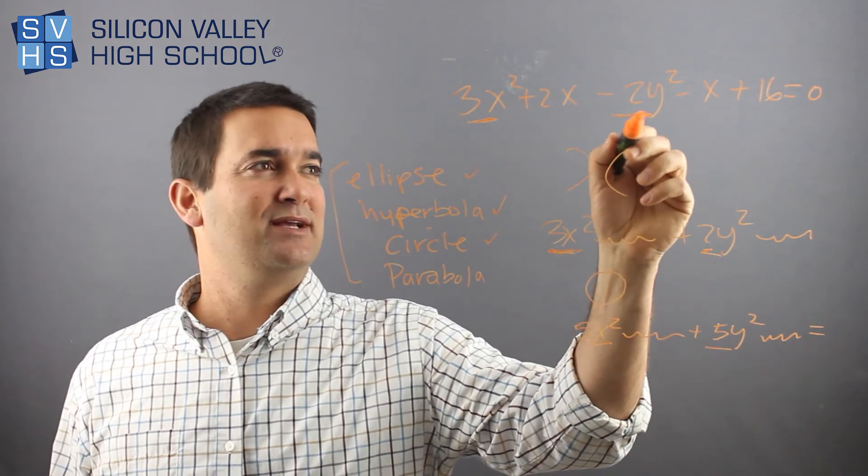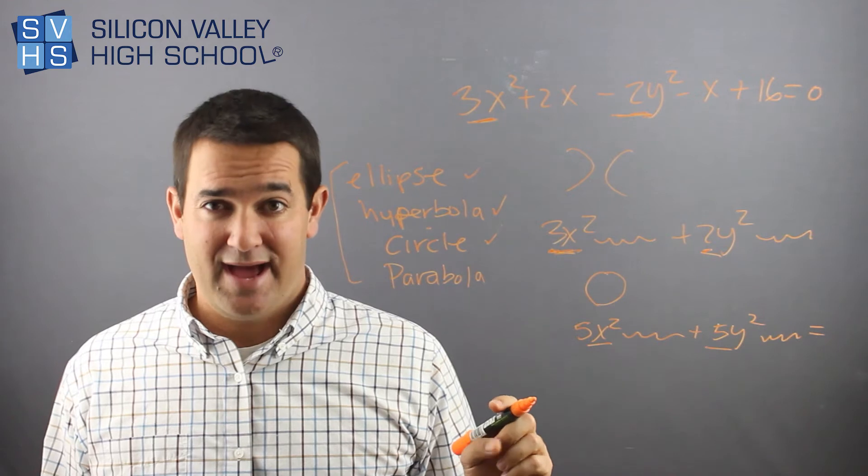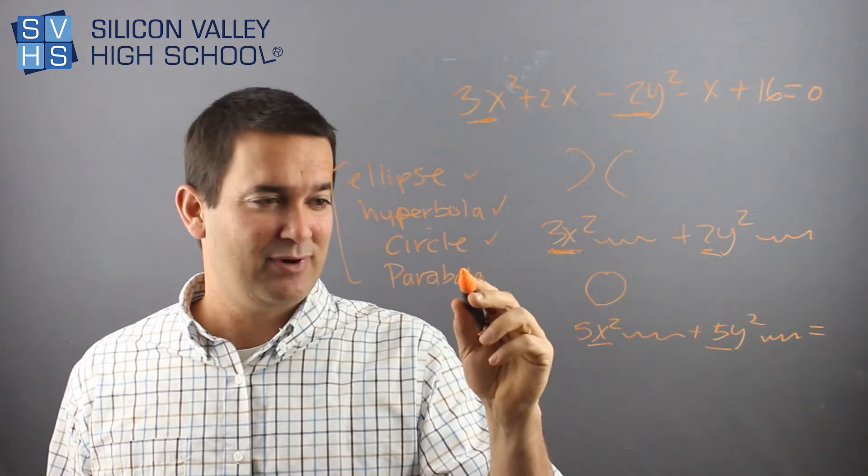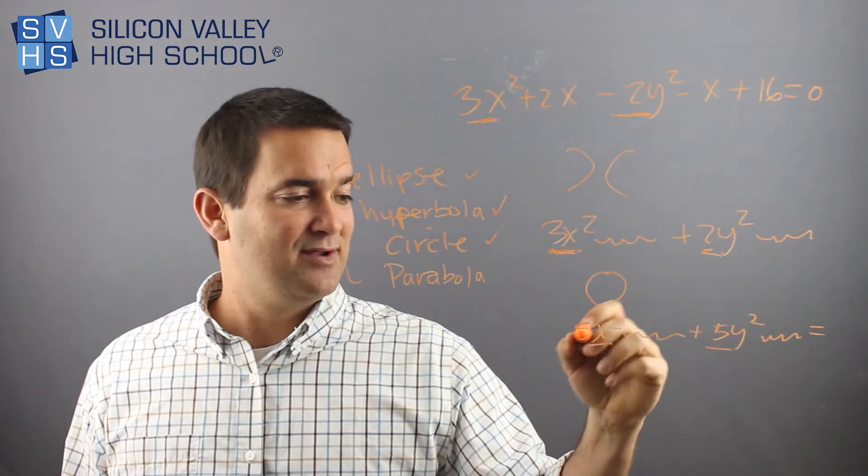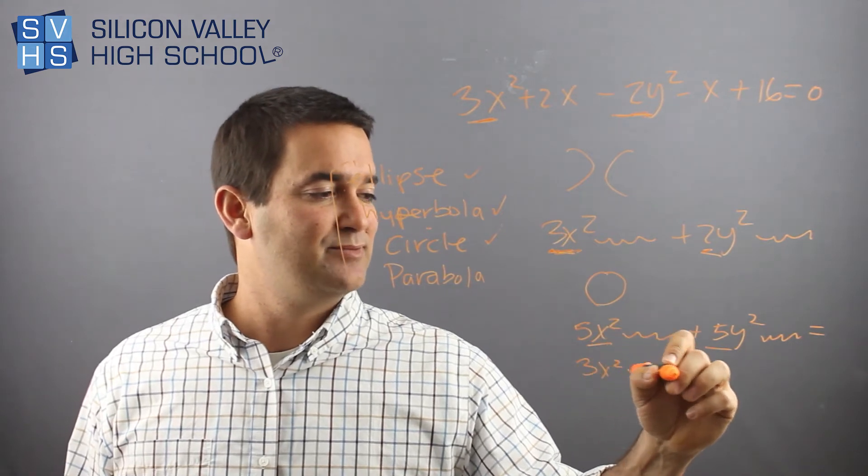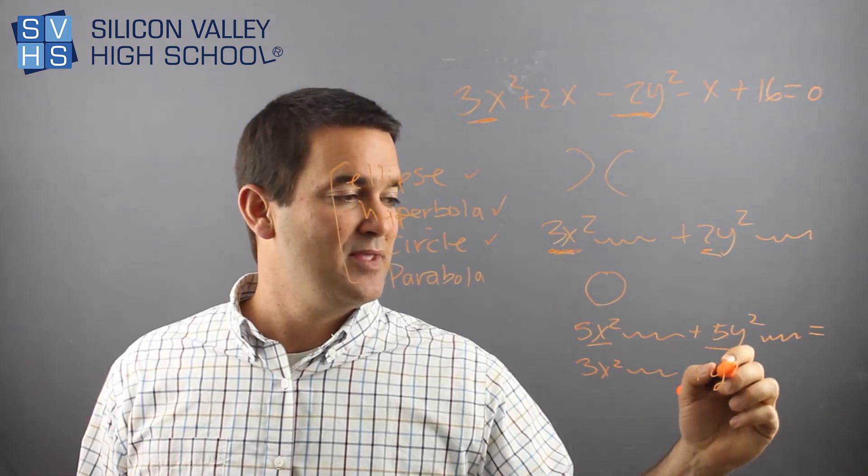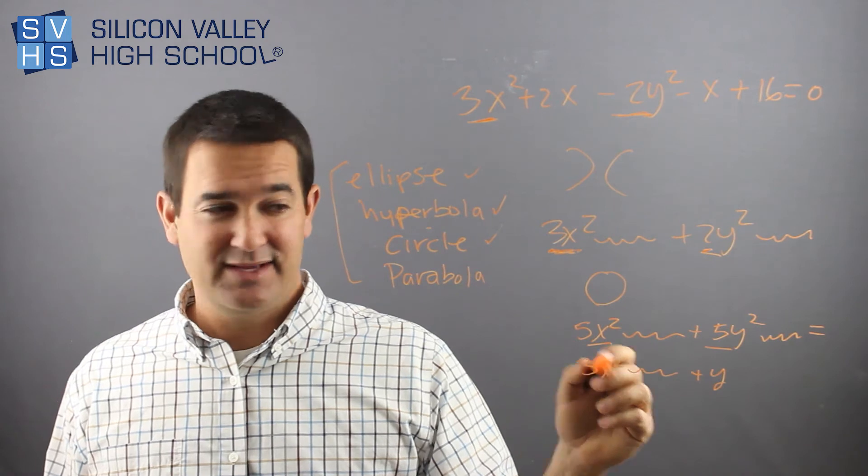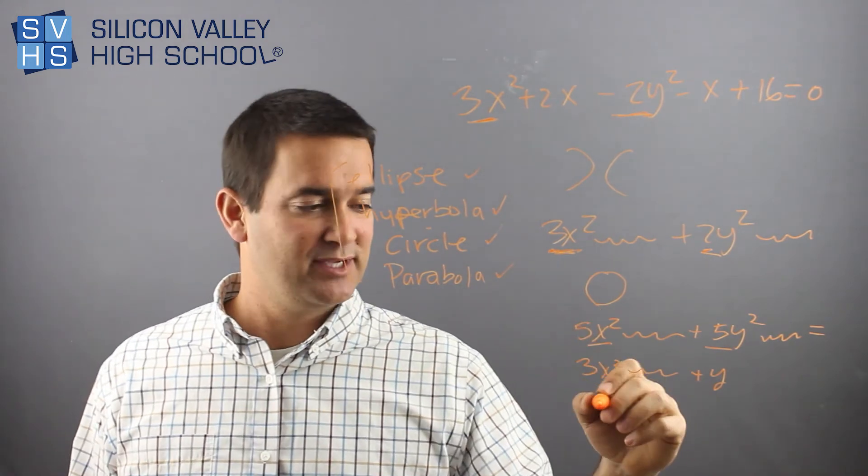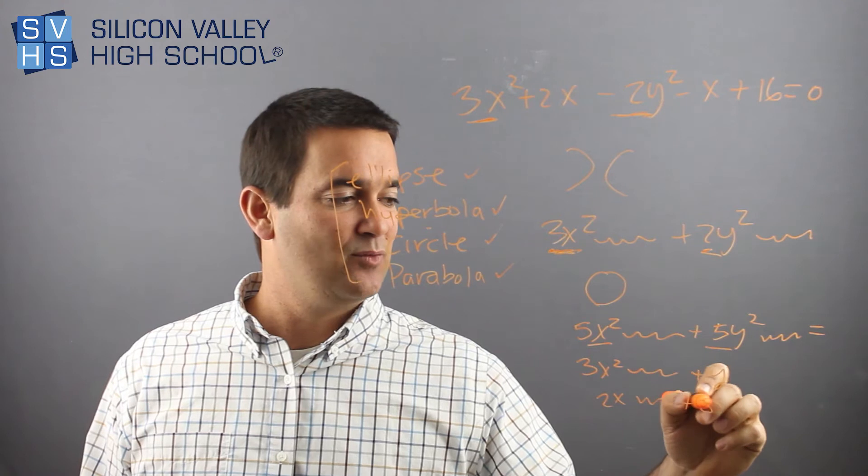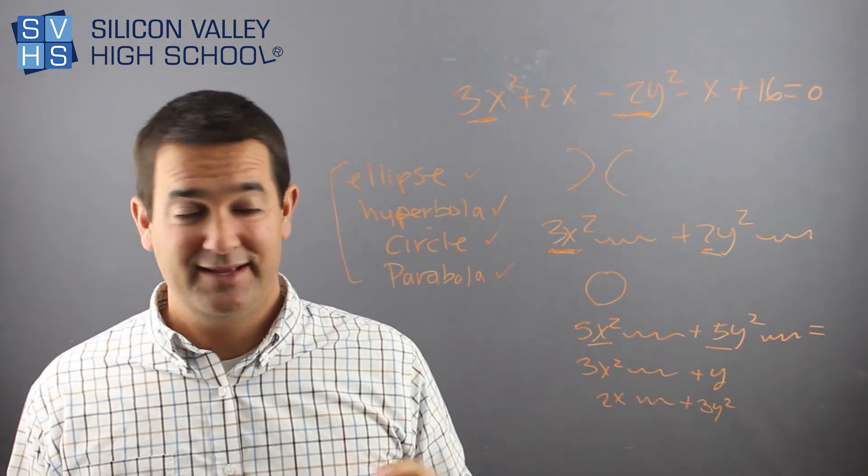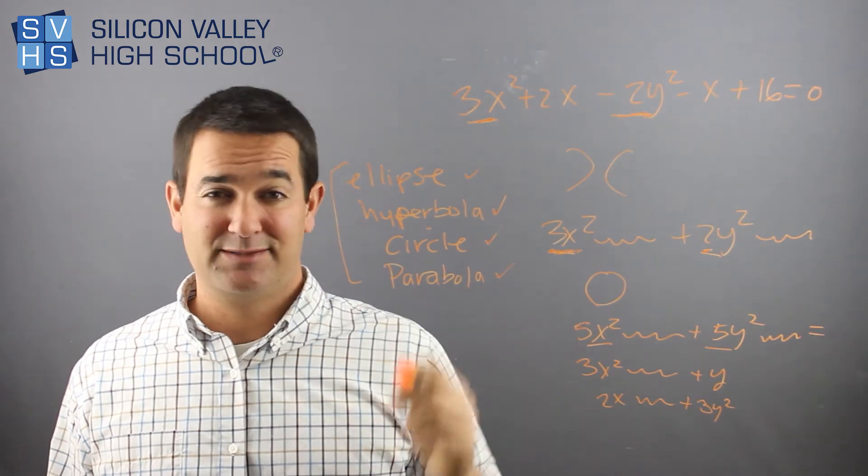So look for the x squared and the y squared and find out. Are they added or are they subtracted? And then a parabola is even easier because a parabola, they're not both squared. It's either 3x squared and some stuff and then a plus y, and then one guy squared and not the other parabola. Or, of course, it could be 2x plus 3y squared. And if the y squared is squared and not the x, again, it's a parabola.